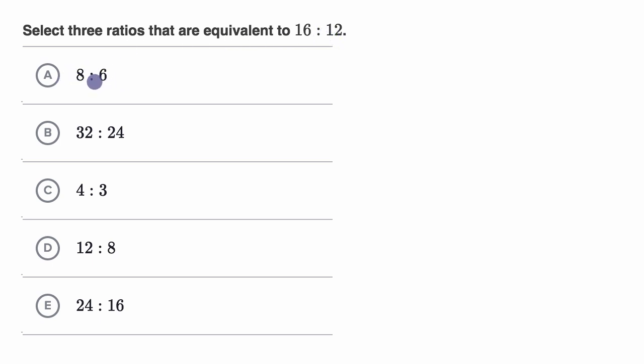All right, let's look at this first one. So eight to six. So at first you might say, well gee, these numbers are smaller than 16 and 12. But remember, you can, to get an equivalent ratio, you can multiply or divide these numbers by the same number. So to get from 16 to eight, you could view that as, well, we just divided by two. And to go from 12 to six, you also divide by two. So this actually is an equivalent ratio. I'll circle that in.